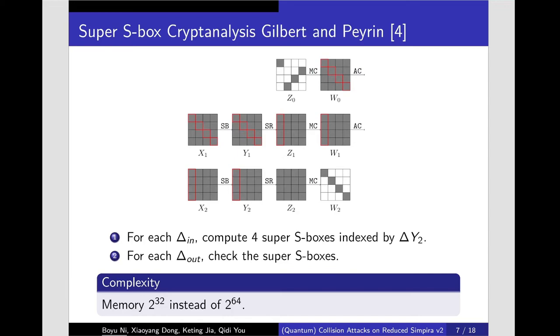Next, we introduce some of the techniques needed to find the collisions. The first one is the super S-box technique. As shown in figure, the target is to search for a pair of values whose difference satisfies the truncated differential from ΔZ_0 to ΔW_2 from each of the 2^32 differences at state Z_0.